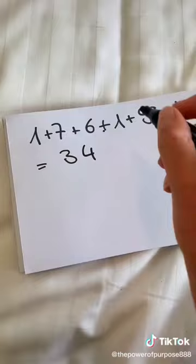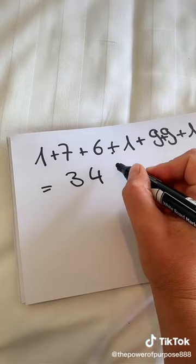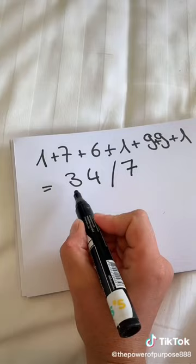When you have the 34 and this is not a single digit number yet, then you reduce it further down to 3 plus 4 equals 7. This is the way how I write the life path number down, though the 7 is your essence.